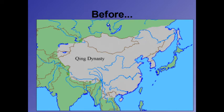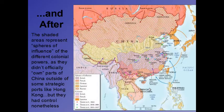Before, the Qing Dynasty was in control of all of this region — it had been in control for hundreds of years. After the imperialistic movements from European powers, you can see the results on the map, and we're going to talk about how all this went down.